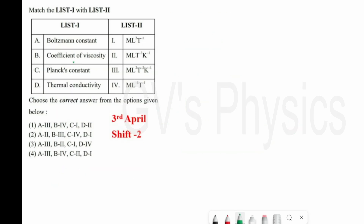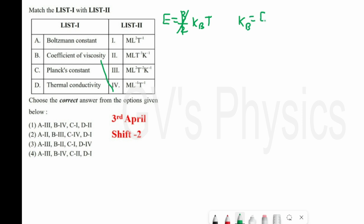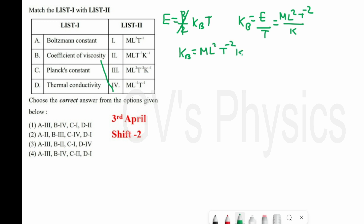In the previous question we found the dimension formula for coefficient of viscosity: ML⁻¹T⁻¹, so B matches with 4. First one is Boltzmann constant. From thermodynamics, E = (3/2)k_B T. So k_B = E/T, giving dimension ML²T⁻²K⁻¹. Boltzmann constant A matches with 3.